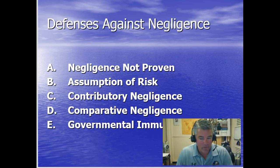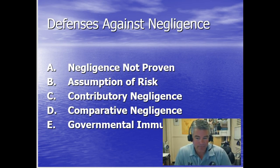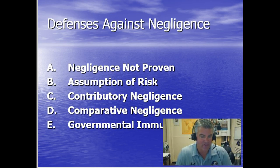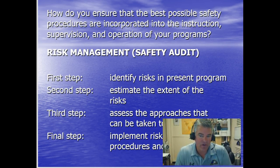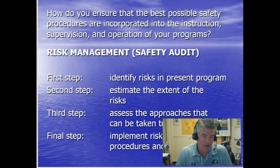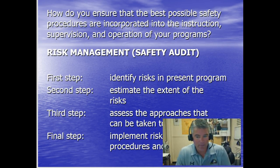The best way to stay out of court and provide programs not threatened by negligent acts is to be proactive about creating safe environments where employees understand risks and how to manage the inherent dangers of the activity. As administrators, risk management means ensuring that the best possible safety procedures are incorporated into the instruction, supervision, and operation of our programs. The steps are: first, identify risks in present programming; second, estimate the extent of those risks; third, assess the approaches that can be taken to reduce risk; and fourth, implement risk reduction procedures and policies.